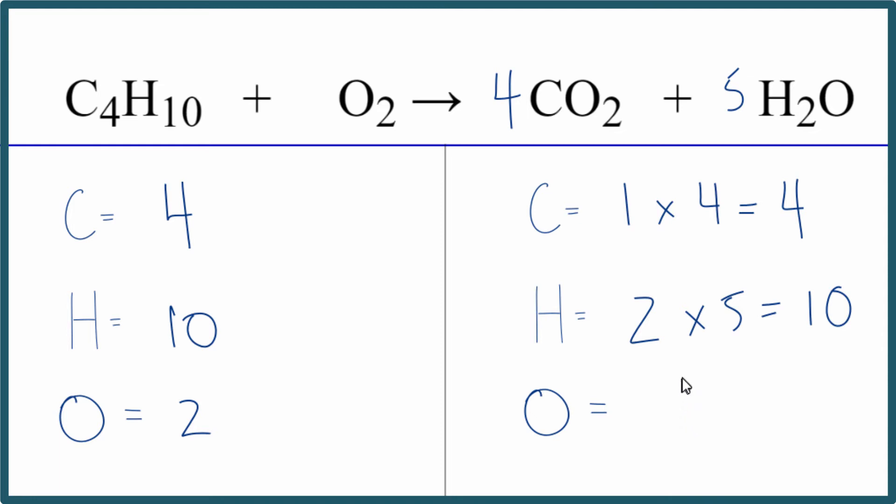So we have two times four, eight plus five times the one, five. So we have 13 oxygen atoms. And at this point, it looks like we're almost done. But how do we balance this when we have 13 here and two here? The trick is we can use fractions.